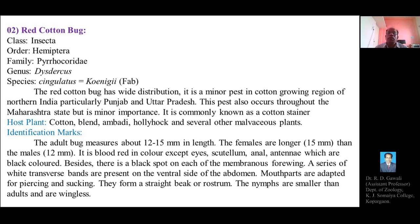Hello students. Last time we explained the life cycle of the jowar stem borer. Now we will explain the second crop pest: the red cotton bug. This is the second type of crop pest which we are going to explain with respect to its identification marks, life cycle, nature of damage, and control measures. The red cotton bug belongs to phylum Arthropoda, class Insecta, order Hemiptera, family Pyrrhocoridae, genus Dysdercus, and species singulatus.